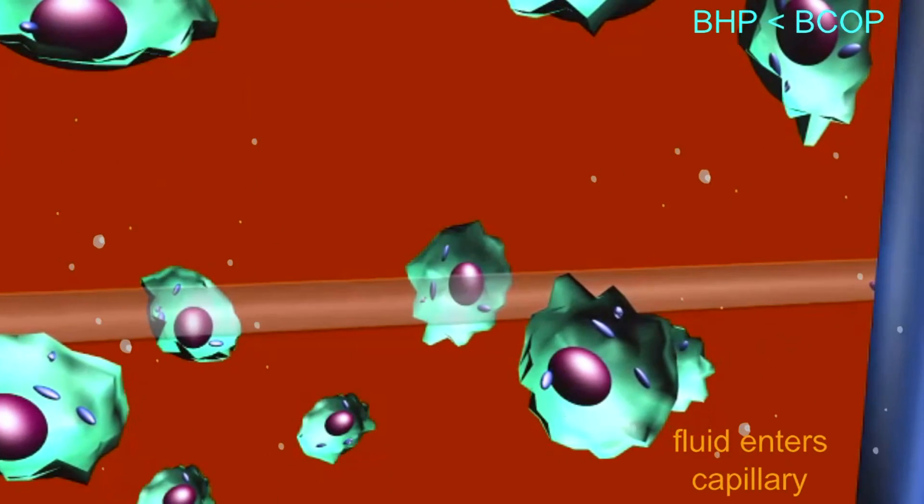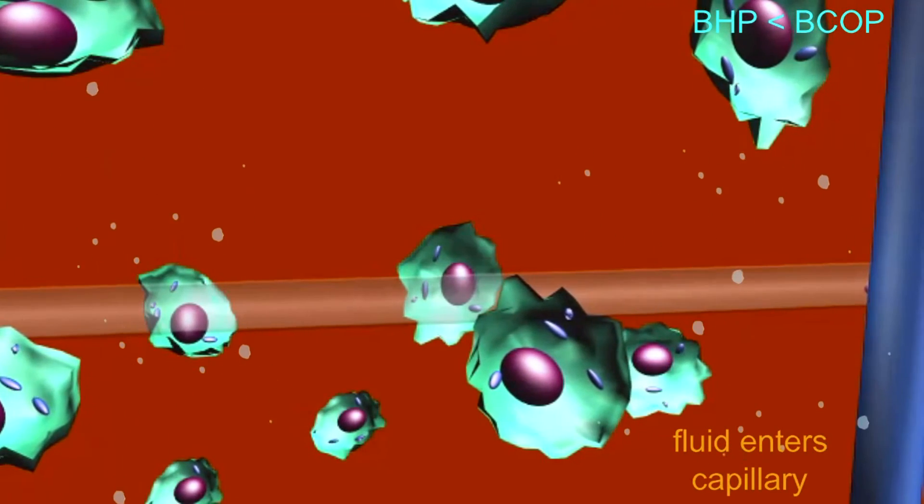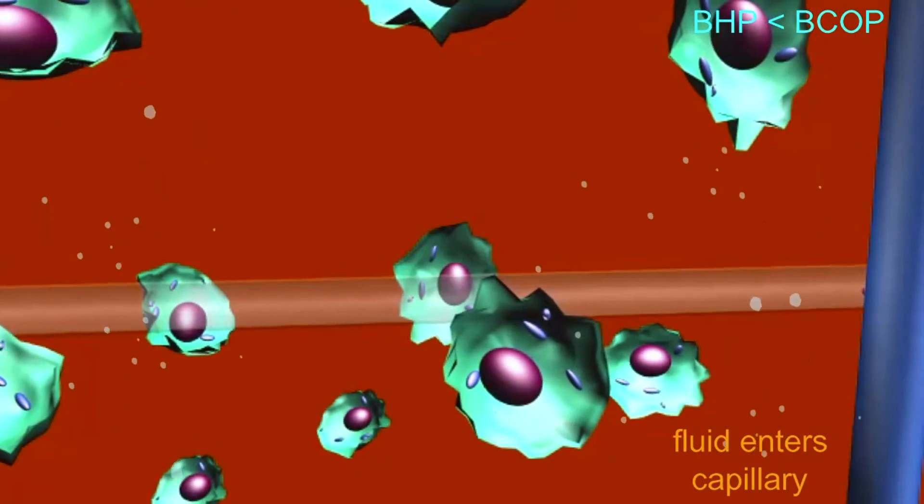So most of the fluid which left the capillary at the arterial end returns to the capillary at the venule end.